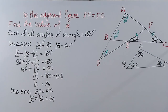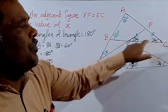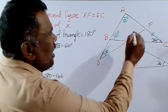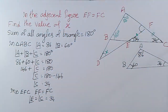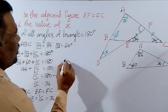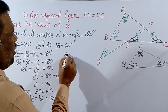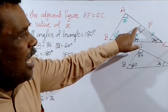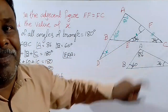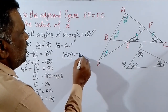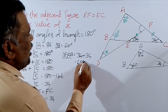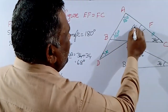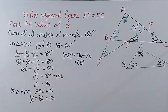Now, in triangle E, F, C — this exterior angle is equal to the sum of its interior opposite angles. So the exterior angle equals 34 plus 34, which is 68 degrees.